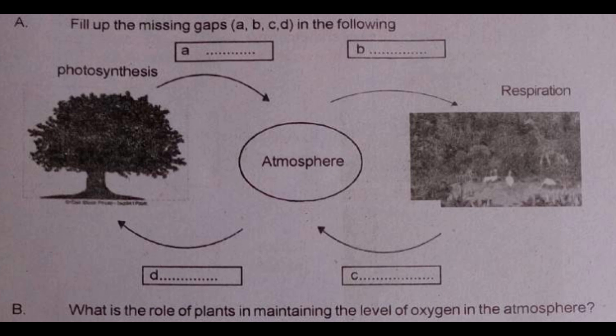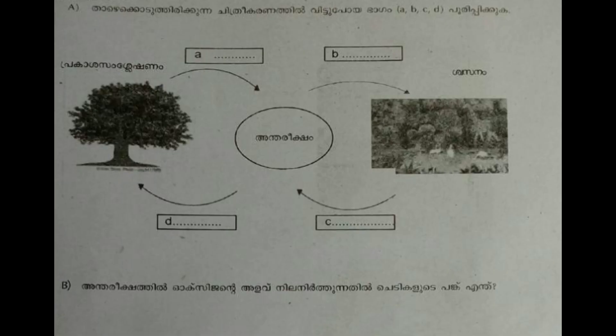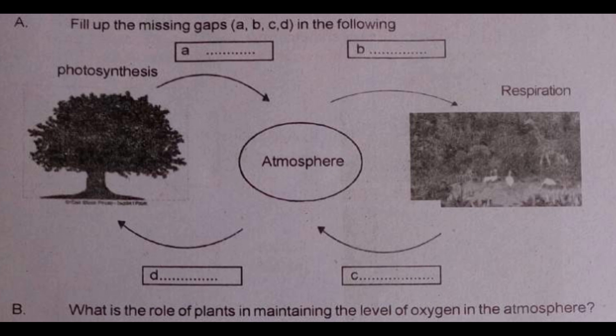In our textbook, we will show you how to use it. You can use it as a plant example — you can use photosynthesis, you can use respiration. This is the atmosphere. A, B, C, D is filled with 4 boxes. Plants will be added to the atmosphere.